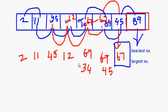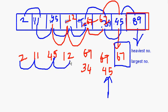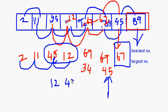Now the second largest number has also come to the end. In the next looping you will have to consider only up to this number. When you do the next looping, 2 and 11 — nothing. 11 and 45 — nothing. Then 45 and 12: swapping will start, 12 will come here and 45 will go there.